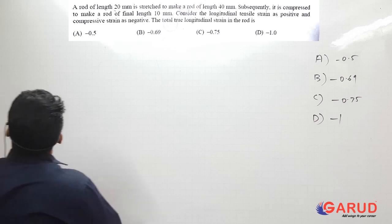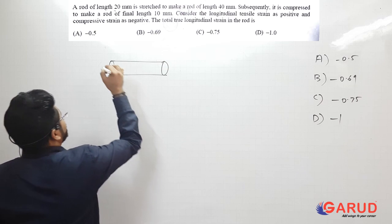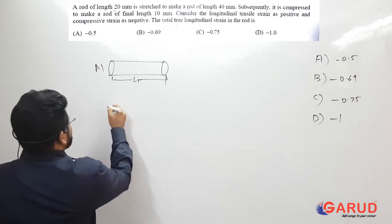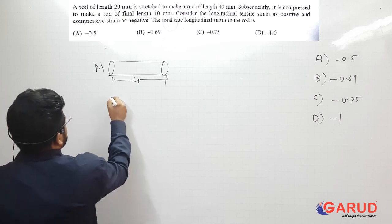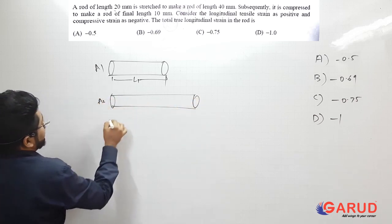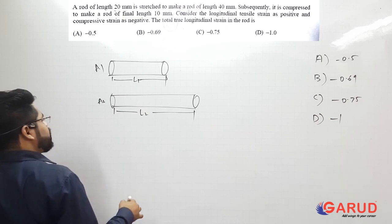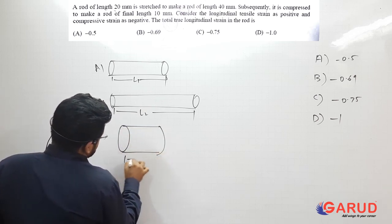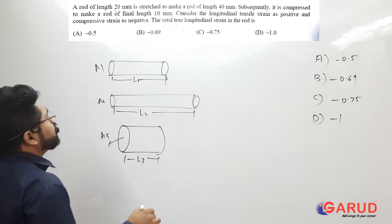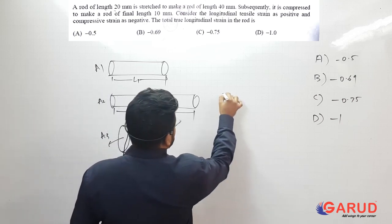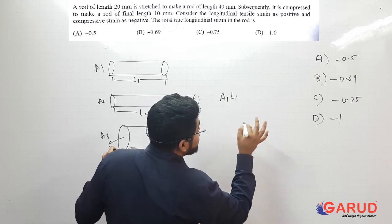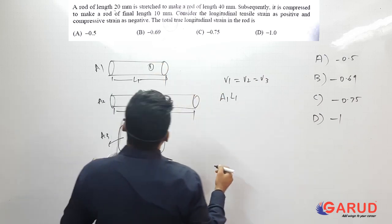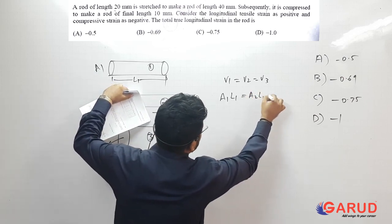Let's set up this sum. Consider the initial rod with area A1 and length L1. When it is elongated, the area reduces to A2 and length becomes L2. When subsequently compressed, diameter increases and length reduces to L3 with area A3. Importantly, the volume remains constant throughout: V1 = V2 = V3, meaning A1·L1 = A2·L2 = A3·L3, because no material is added or removed.